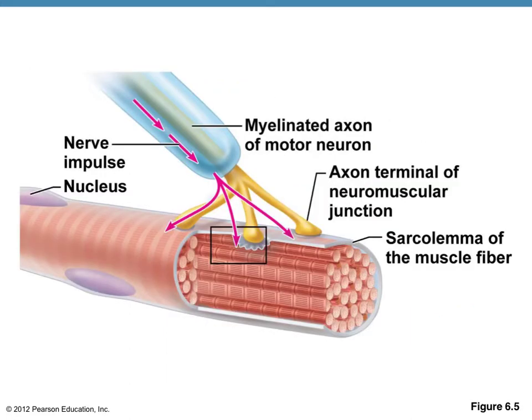Shown here in this diagram, it shows the nerve impulse or the action potential as symbolized by the pink arrows. It comes down the axon, and then there are three axon terminals shown — where there's the actual junction between the neuron and the muscle cell. It's here where the action potential turns from an electrical signal to a chemical signal to span that gap.